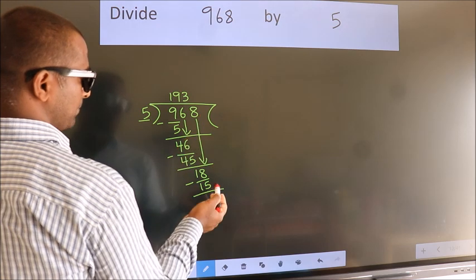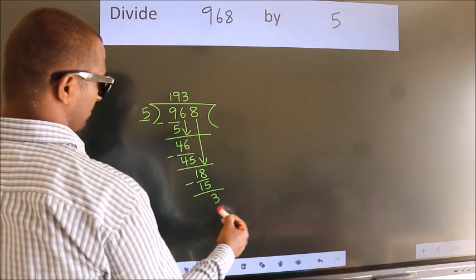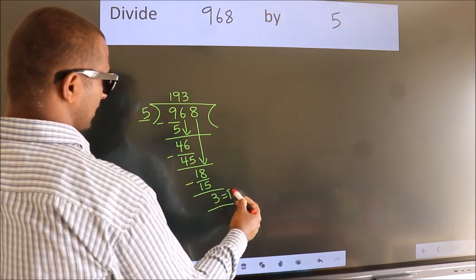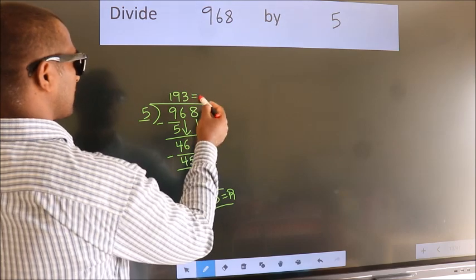No more numbers to bring it down. So, we stop here. This is our remainder. This is our quotient.